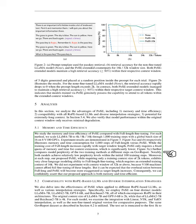Both models achieve relatively low perplexity within the initial 100 training steps. Moreover, our proposed PoSE, while requiring only a training context size of 2K tokens, exhibits very close language modeling ability to full-length fine-tuning, which requires an extended training context of 16K. We did not experiment with context windows of 32K or above because V100 machines cannot afford full fine-tuning at these lengths, but the overhead ratio between full-length training and PoSE will become more exaggerated as target length increases. We can confidently assert that our proposed approach is both memory and time efficient.